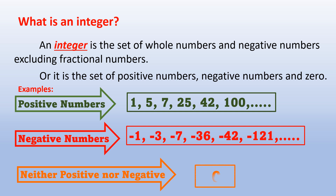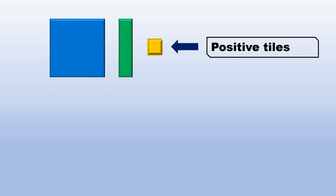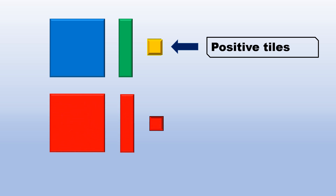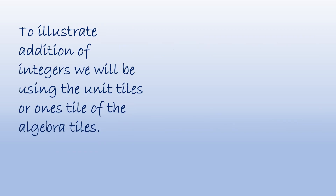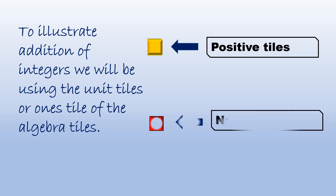0 is neither positive nor negative. The blue, green, and yellow are positive tiles. The red are negative tiles. To illustrate addition of integers, we will be using the unit tiles or ones tile of the algebra tiles, or we call it the small square tiles.